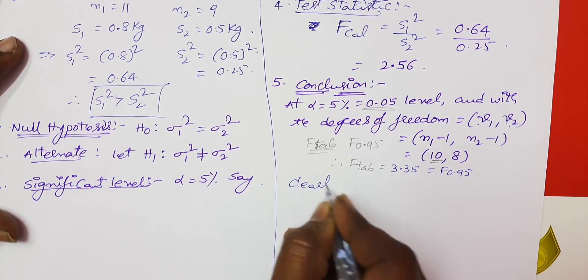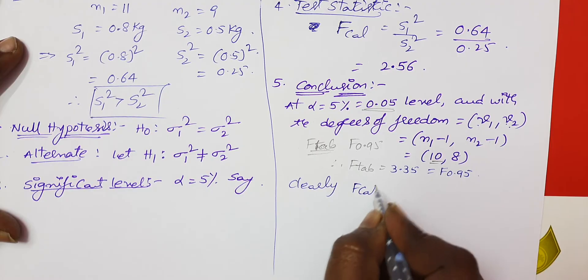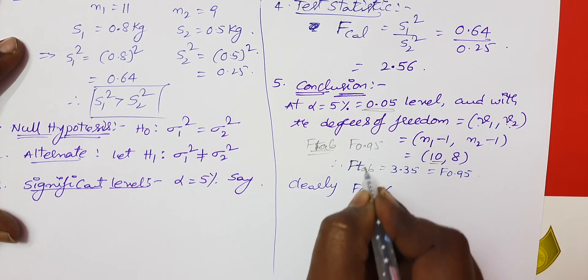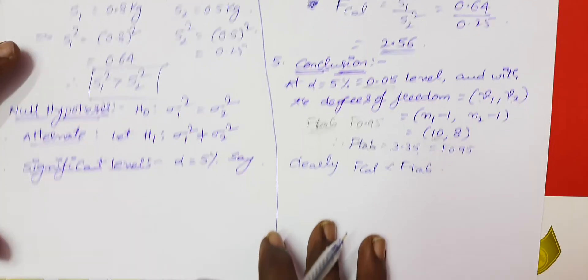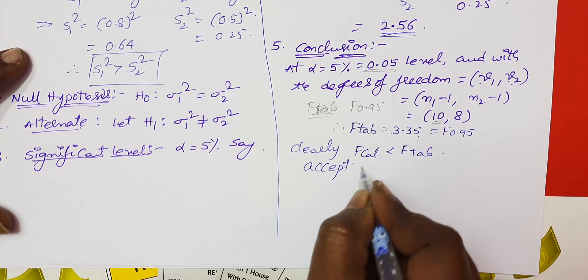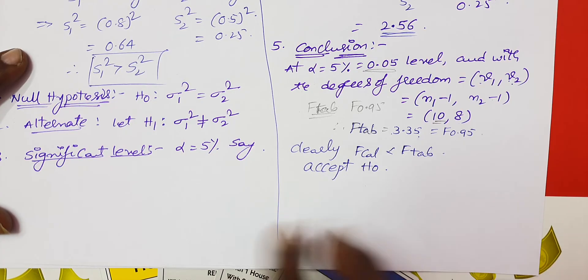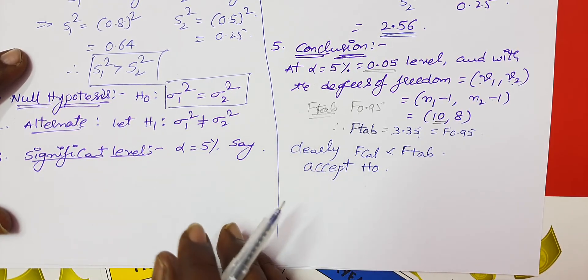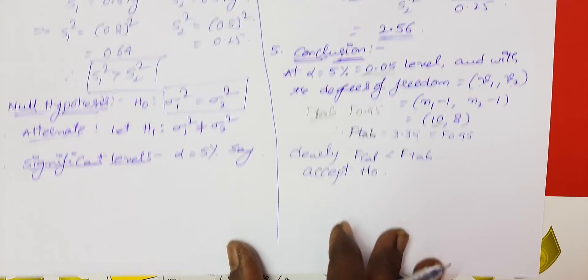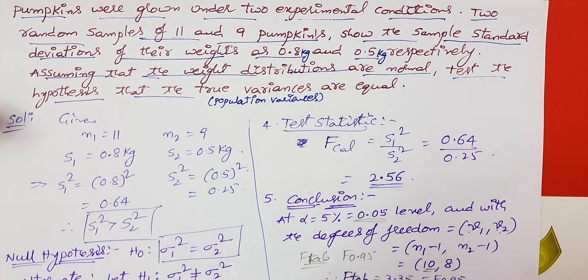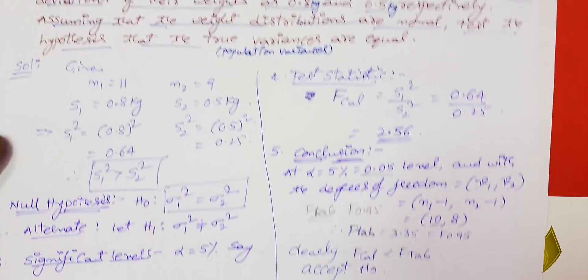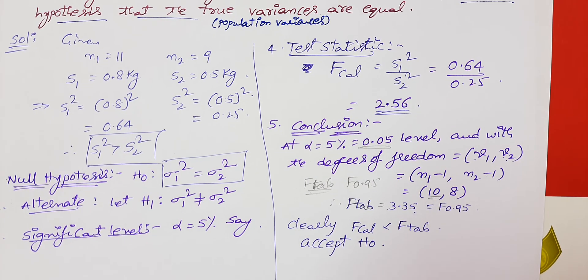Clearly, the F calculated value of 2.56 is less than the F table value of 3.35. Therefore, we accept H0. This means sigma1 squared equals sigma2 squared — both population variances are the same under the two different experimental conditions. The F-test is easy, and this completes the test of hypothesis. Thank you very much.